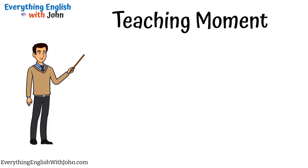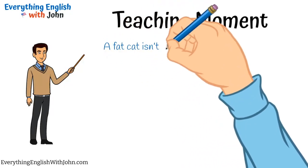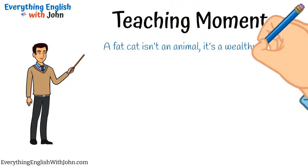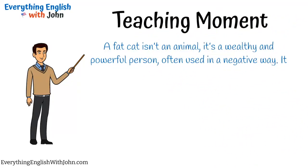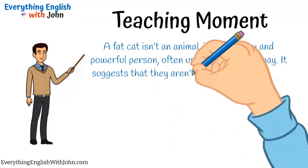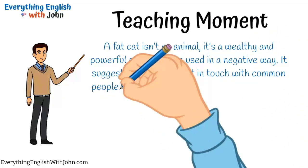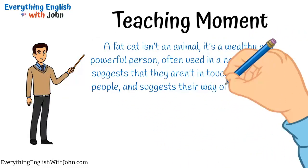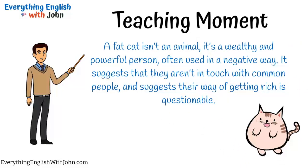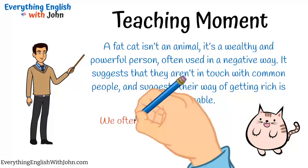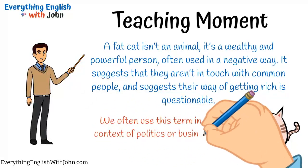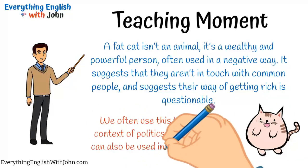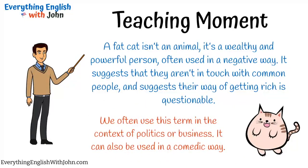Teaching moment. A fat cat isn't an animal. It's a wealthy and powerful person, often used in a negative way. It suggests that they aren't in touch with common people, and suggests their way of getting rich is questionable. We often use this term in the context of politics or business. It can also be used in a comedic way.